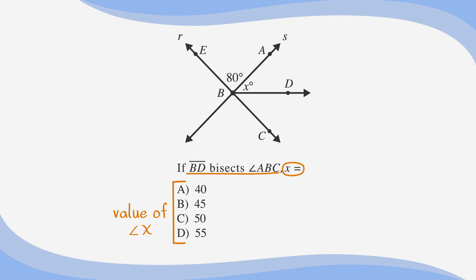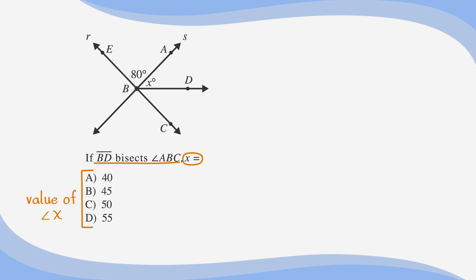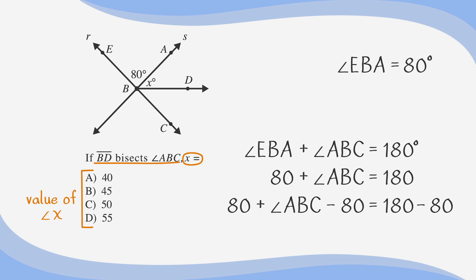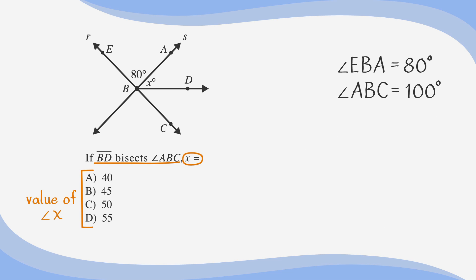We know from the picture that angle EBA is equal to 80, and that EC is a straight line. This means that angle EBA plus angle ABC is equal to 180 degrees. Let's plug in 80 degrees for angle EBA, which gives us 80 plus angle ABC equals 180. Subtracting 80 from both sides, we have angle ABC equals 100 degrees. This brings us one step closer to solving for x, which is angle ABD.